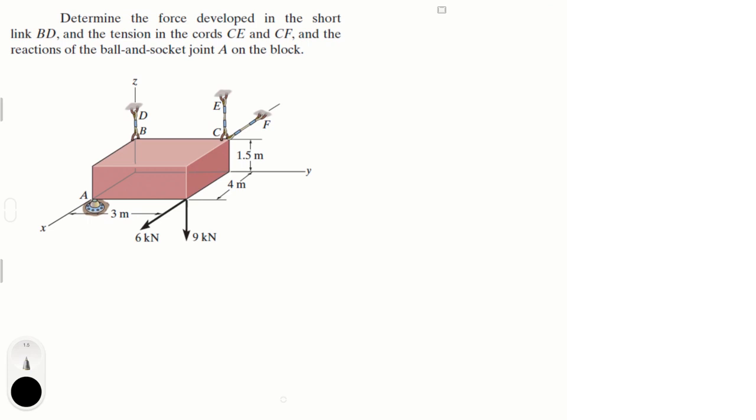Alright guys, let's do this problem that says determine the force developed in the short link BD and the tension in the cords CE and CF and the reactions at the ball and socket joint at A on the block.